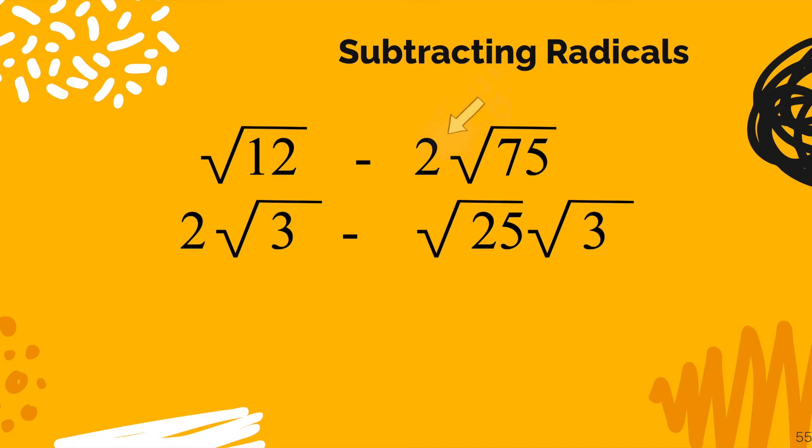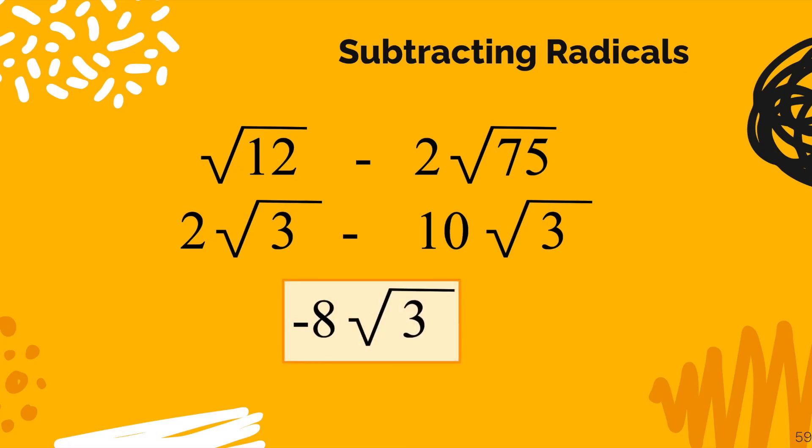So I'm going to split it up into radical 25 times 3. Now don't forget about that 2 that was out front as a coefficient. I'll bring that down. And then radical 25 simplifies to be 5, and then 2 times 5 is 10. So now we have a new problem on our hands. Now that everything is simplified, 2 radical 3 minus 10 radical 3, and you see the answer is negative 8 radical 3.